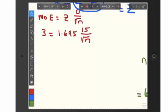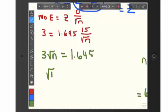What you could do is say, I'm going to multiply both sides by the square root of n. Then, I'm going to divide both sides by 3. Let me tell you that 15 there. Divide both sides by 3.